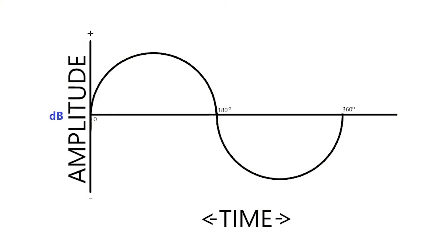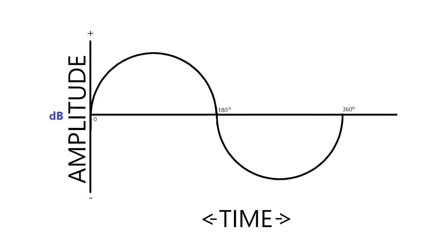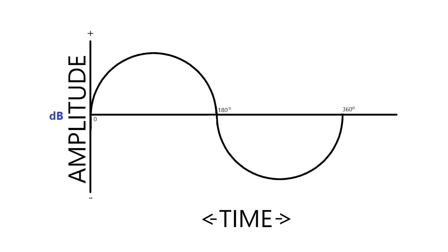Let me show you with a couple of pictures. Here we have a simple waveform — let's pretend we recorded this on the computer, so it's digital information. The way it works is your analog-to-digital converter takes the analog sound, whatever you're recording, and converts it into digital information so the digital language can understand it. The way it does this is by taking snapshots of your waveform.